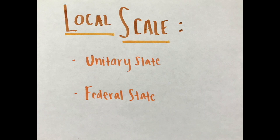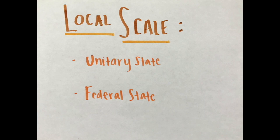The unitary government system works best in nation-states characterized by few internal cultural differences and a strong sense of national unity. Because it requires effective communications with all regions, smaller states are more likely to adopt it, and unitary states are especially common in Europe. In a federal state such as the United States, local governments possess considerable authority to adopt their own laws. Multinational states may adopt a federal system to empower different nationalities. Under a federal system, local government boundaries can be drawn to correspond with regions inhabited by different ethnicities. The federal system is more suitable for very large states. In recent years, there has been a strong global trend toward federal government.